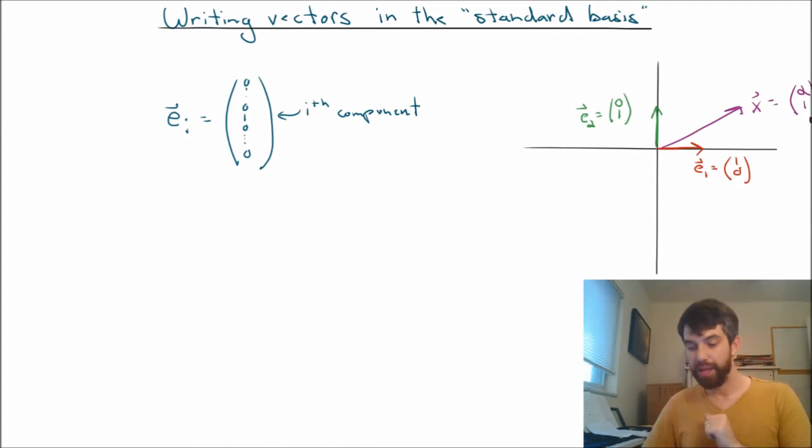Now, here's the big takeaway. This vector, which is two to the right and up one, can be thought of as going twice in the e1 direction—that's two steps to the right—and then once in the e2 direction—that's one step up. In other words, this vector x can be thought of as 2 times e1 plus 1 times e2. And notice the coefficients 2 and 1 are the same 2 and 1 that appear in the definition of my vector.